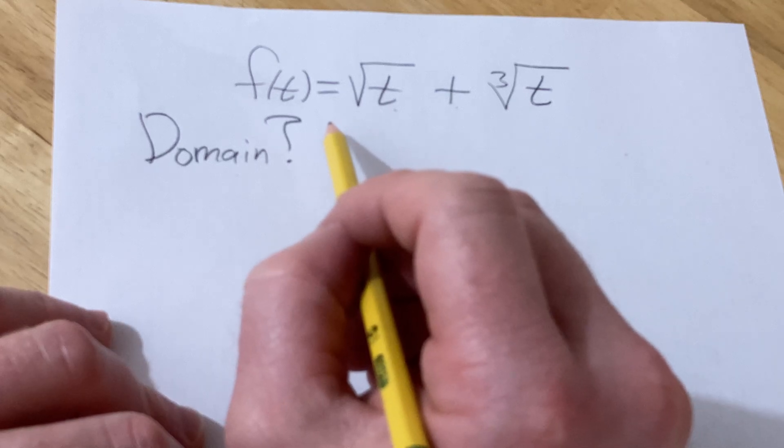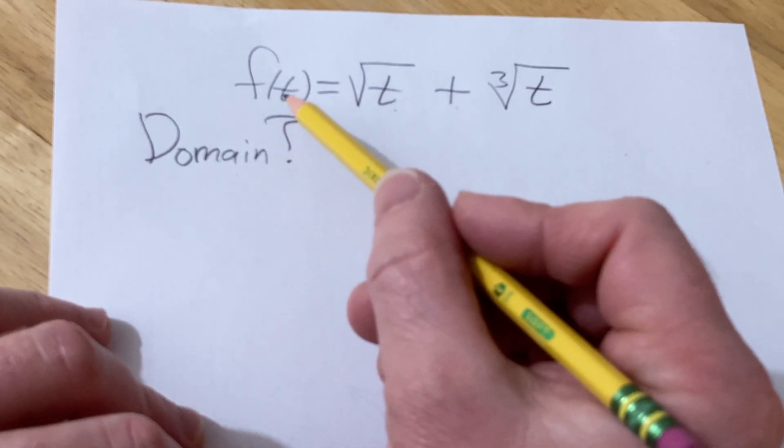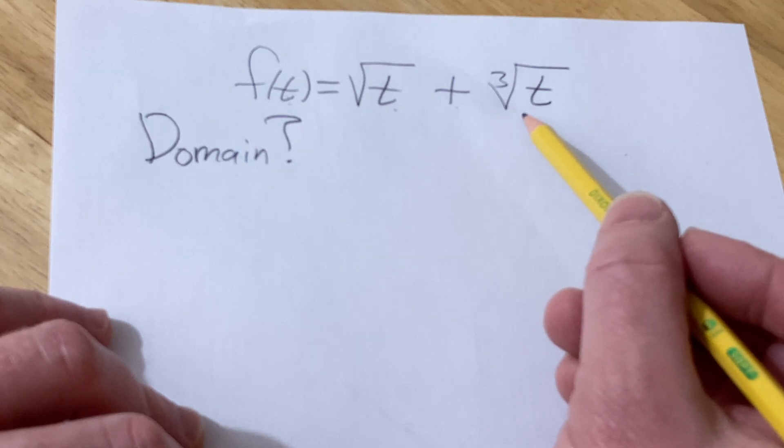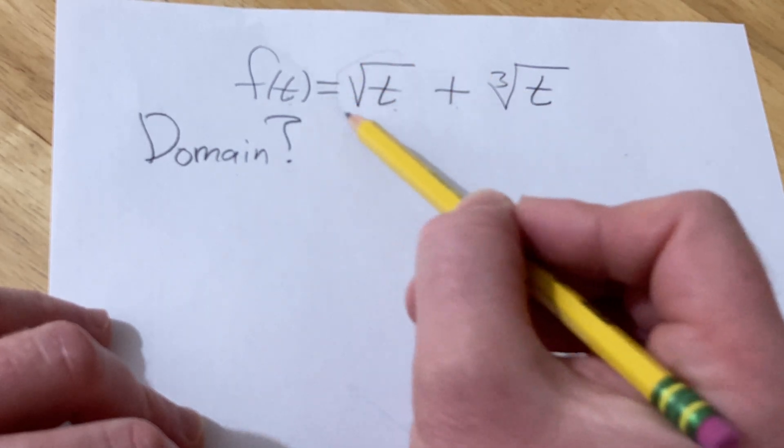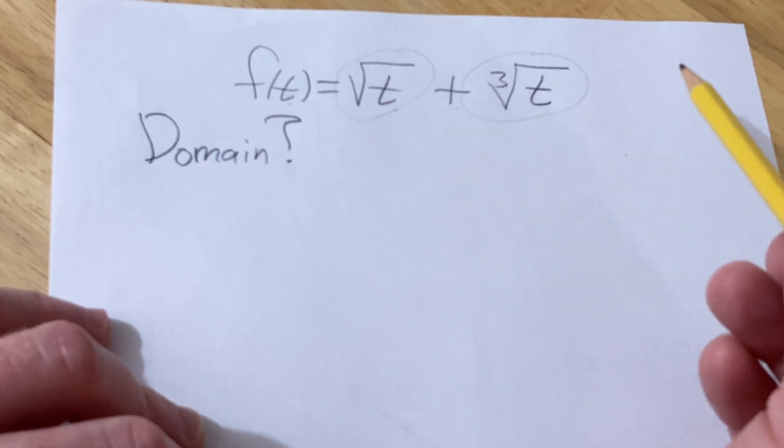So the domain is the set of all inputs. It's all the values of t that you can actually plug in to this function so that it makes sense. And for this function to make sense, basically this has to make sense and this has to make sense. So what does it mean to make sense?